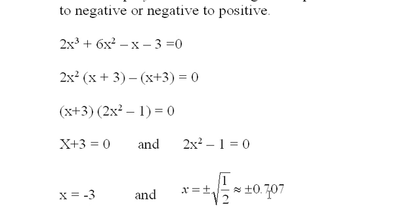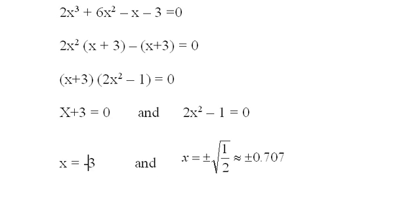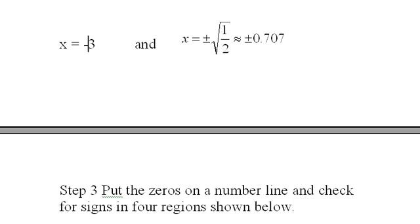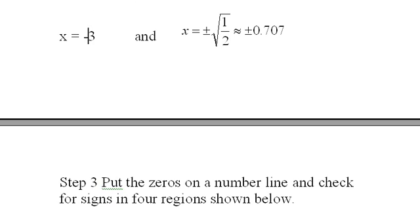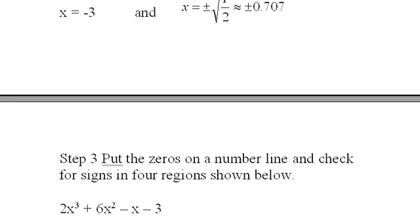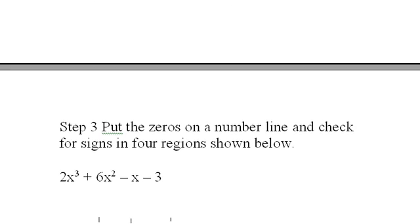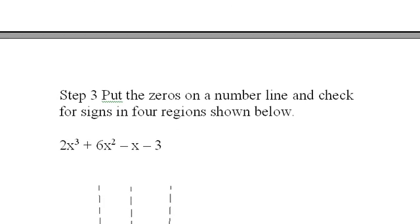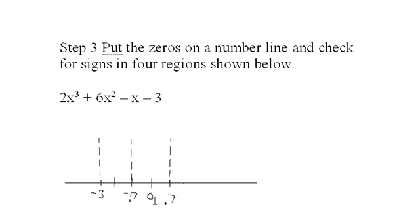I'm going to use plus or minus 0.7 when doing my work here. After you have these roots, you put the zeros on the number line and check for signs in the four regions. Here we have our polynomial with these four regions: negative 0.7, and positive 0.7 marking the boundaries.